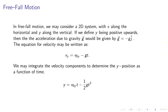Freefall motion. In freefall motion, we may consider a 2D system with x along the horizontal and y along the vertical. We define y being positive upwards. Then the acceleration due to gravity g will be given by g equals negative g j hat. The equation for velocity may be written as vy equals v0y minus gt. We integrate the velocity components to determine the y position as a function of time, y equals v0yt minus half gt squared.